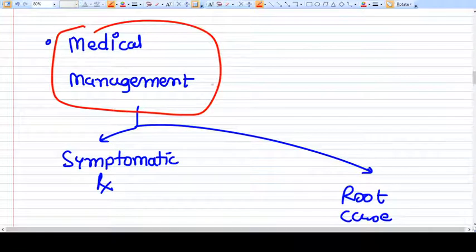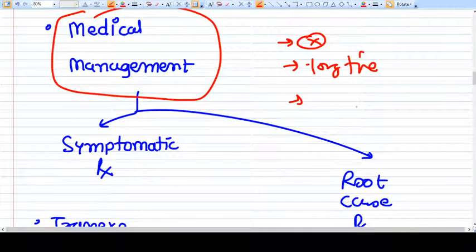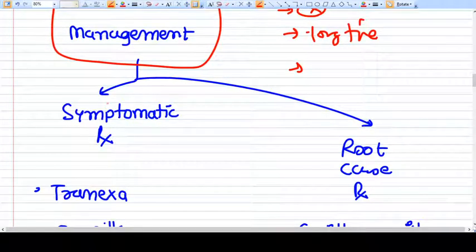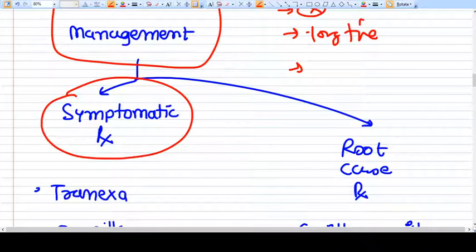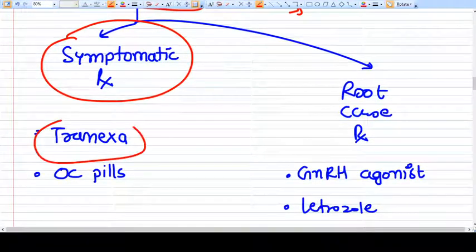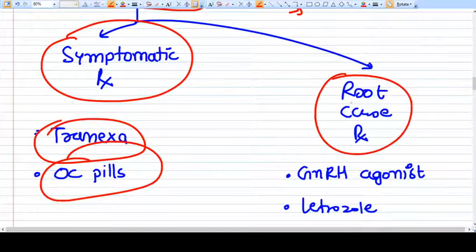Now we have talked about the medical management, what exactly the medical management. First of all you should know this thing, the medical management of fibroids is not very easy. It takes long time plus we don't have very successful rates, so we should use this medical management judiciously. First of all, medical management includes two type of treatment. First of all is symptomatic treatment. For example, the patient has irregular menses and you want to treat the symptoms, then the tranexamic acid and OC pills can help.